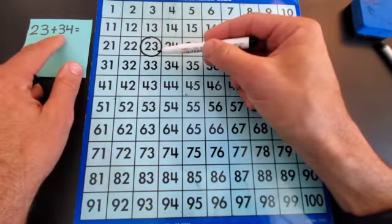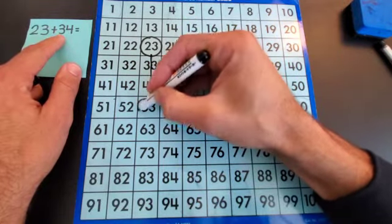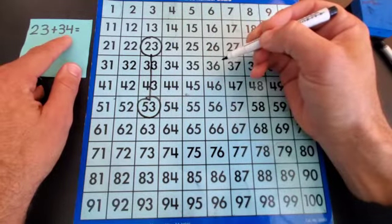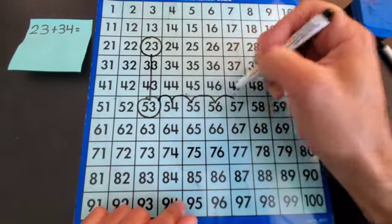In this case, I'm starting at 23 and I take three steps of 10. 1, 2, 3. Now, because I have 4 in the ones place, I take 4 more steps. 1, 2, 3, 4.